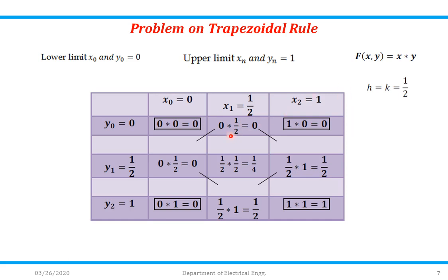For f(x1,y0): x1 = 1/2, y0 = 0, so 1/2 × 0 = 0. For f(x2,y0): x2 = 1, y0 = 0, so 1 × 0 = 0. When x = x0 = 0 and y1 = 1/2, putting these values in the given function gives the corresponding answer. Similarly we find all remaining values and complete the table from the given data.